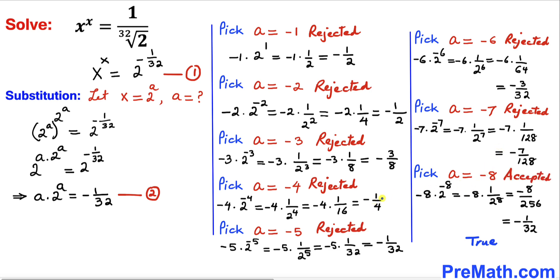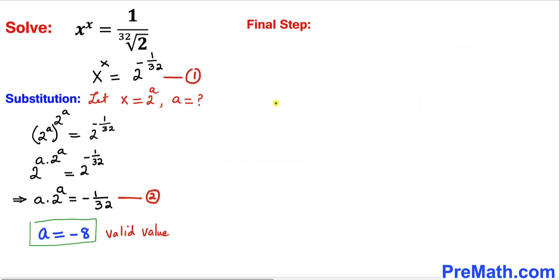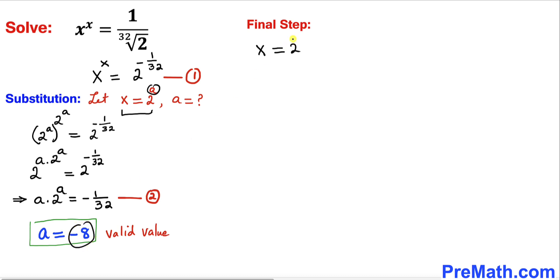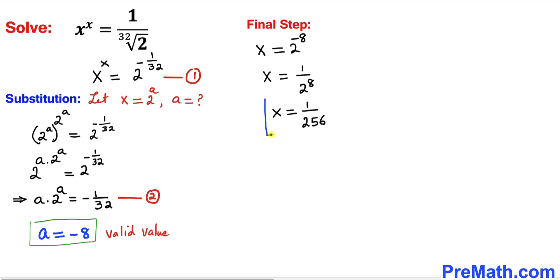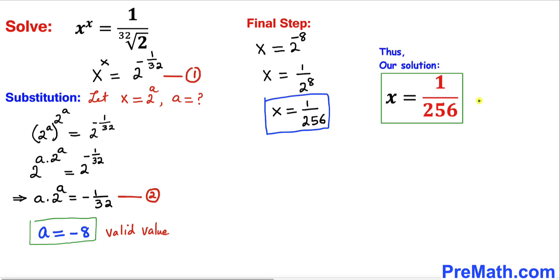After this process we have found a equals to negative 8. Plugging it back into our substitution x equals to 2 power a, we get x equals to 2 power negative 8. The right hand side is 1 divided by 2 power 8, and since 2 power 8 is 256, our solution is x equals to 1 divided by 256.